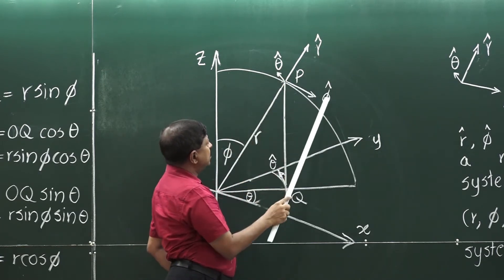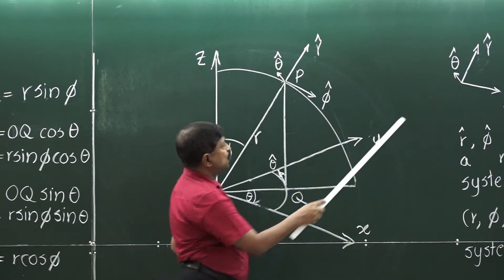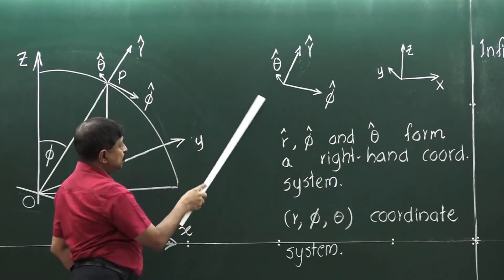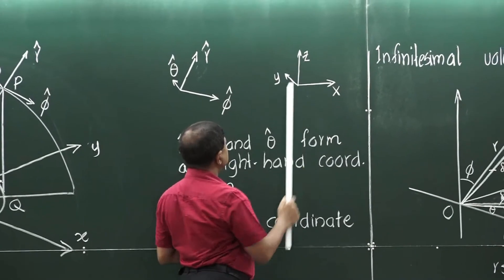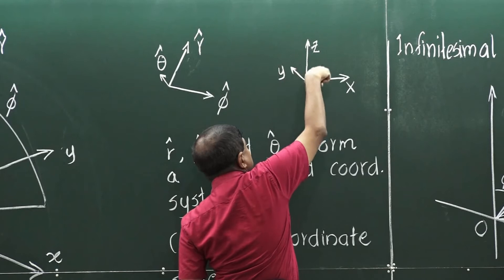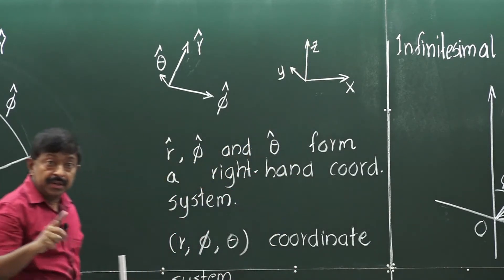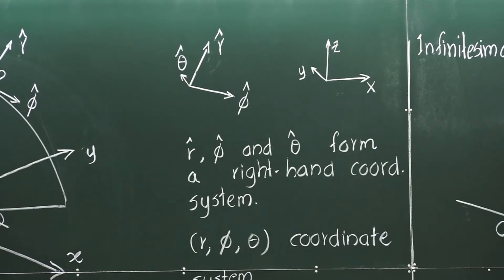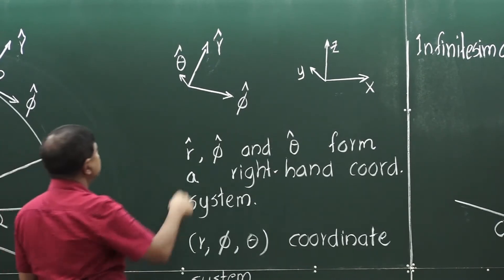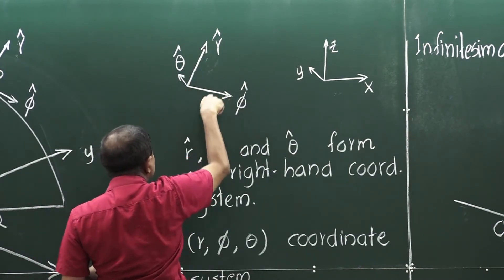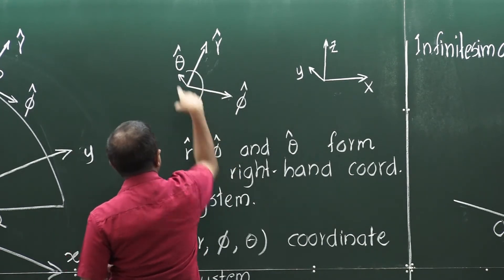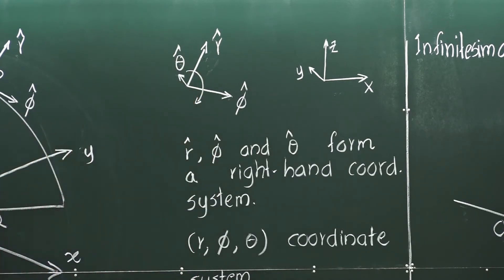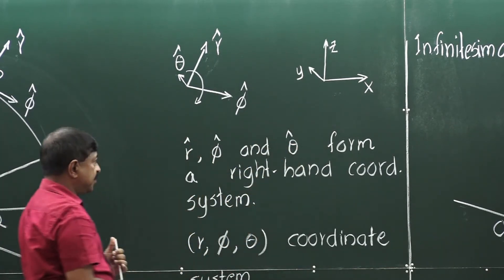This is where you have r hat, phi hat, and theta hat. If you look at this diagram, you have them in this orientation. In the XYZ coordinate system, when you take a screwdriver and move it in this direction, the head moves along the third coordinate axis. Similarly here, if you take r and phi and rotate the screwdriver like this, the head moves inside along the theta hat direction. That means r hat, phi hat, and theta hat form a right-hand coordinate system.